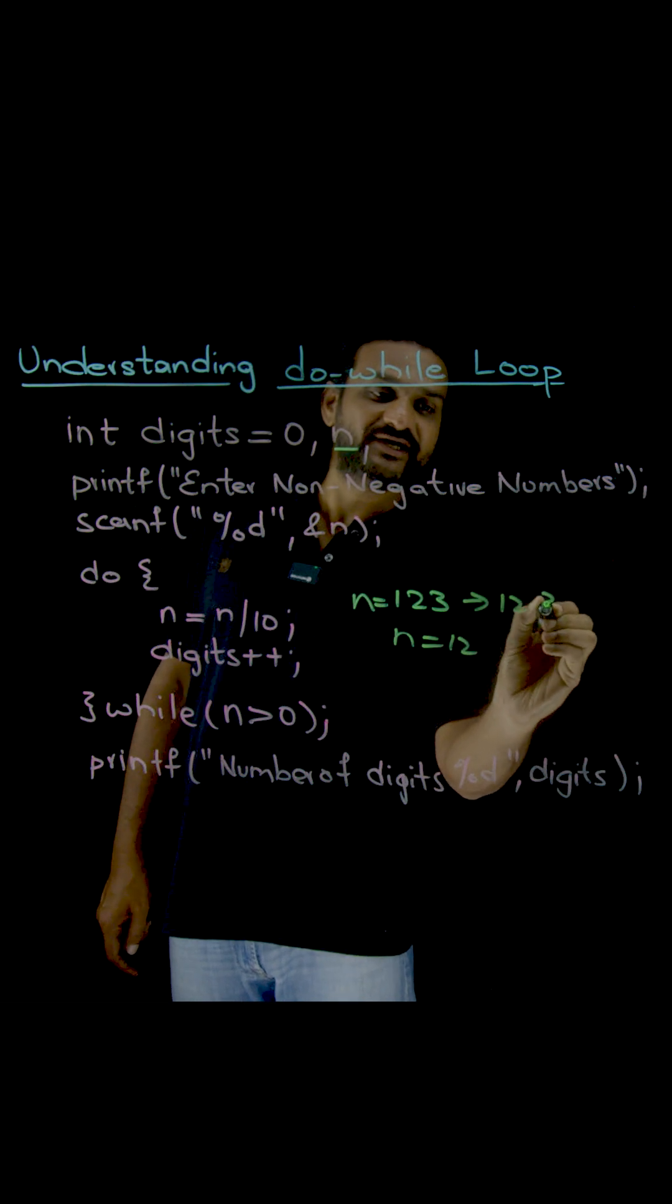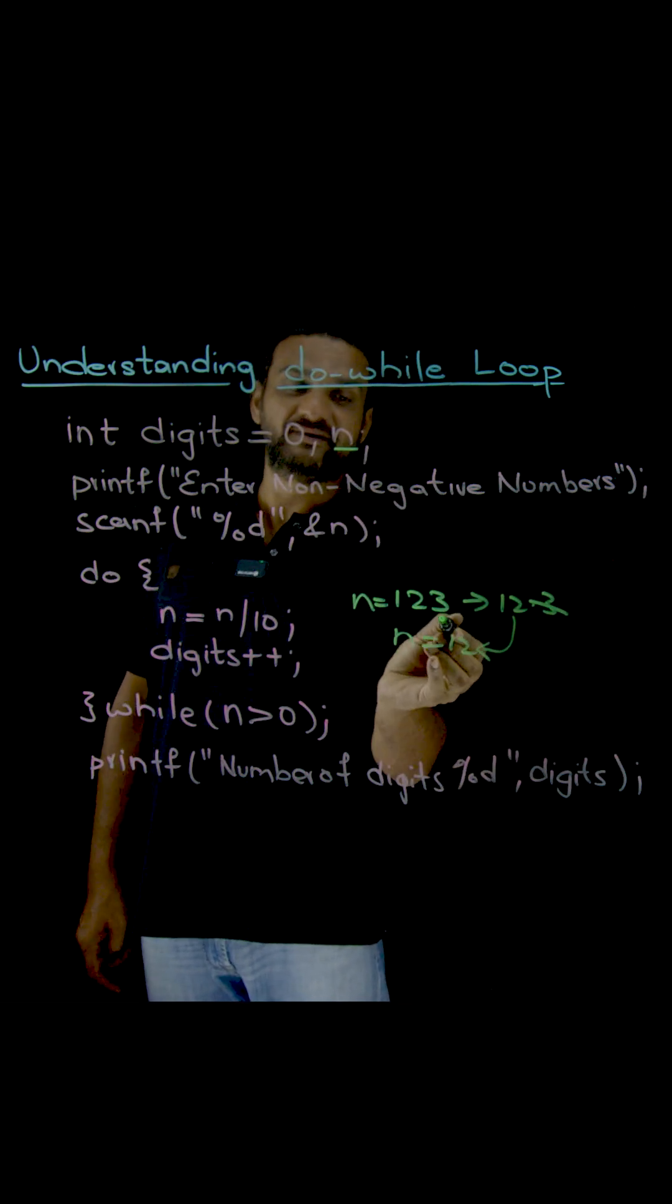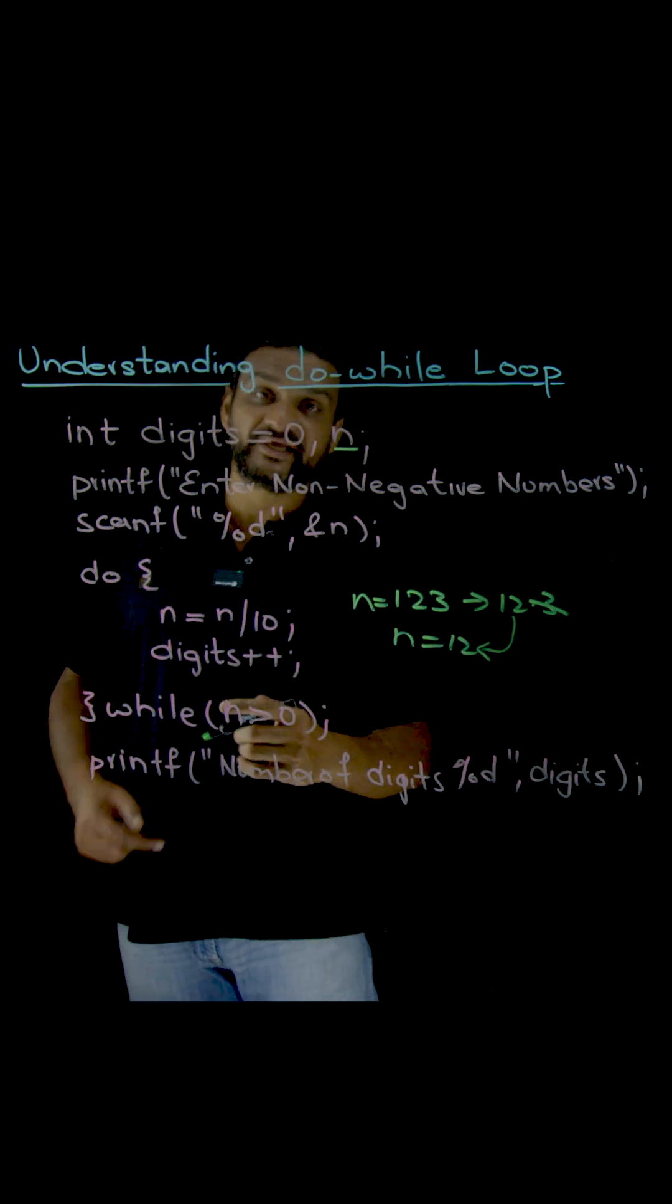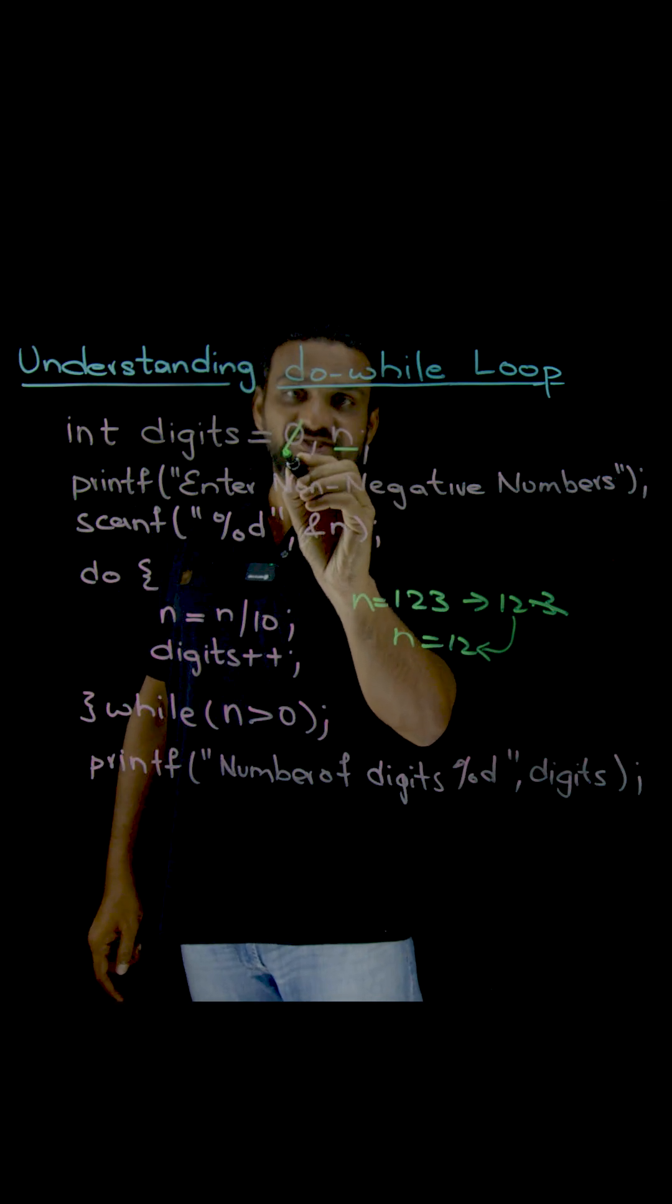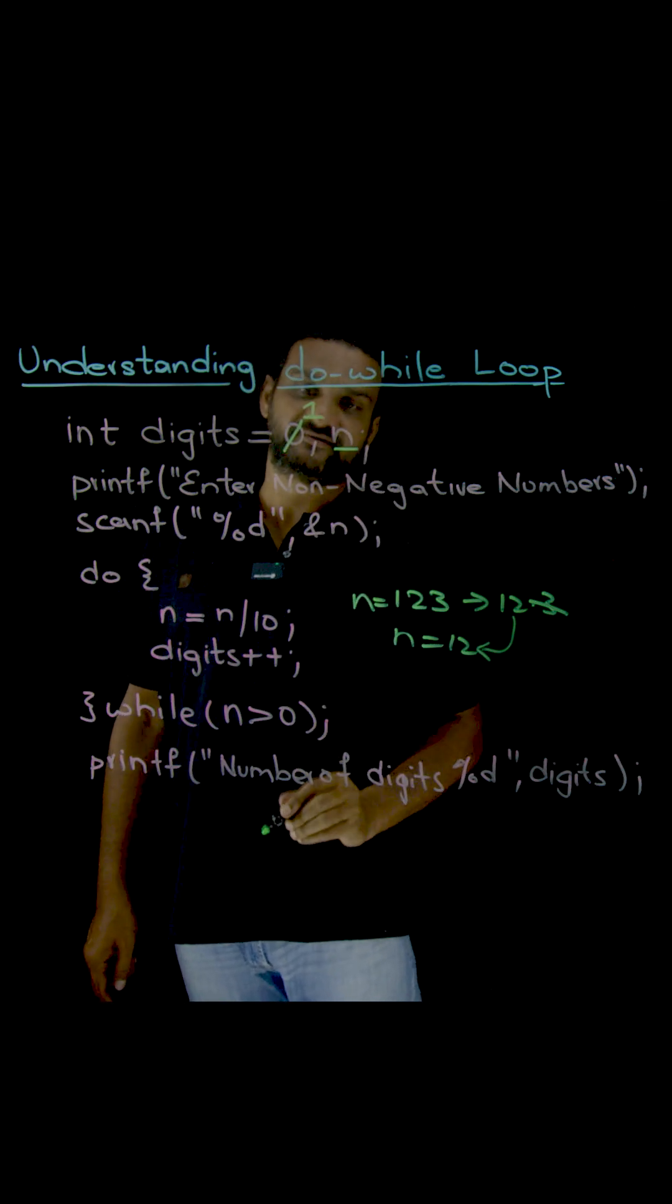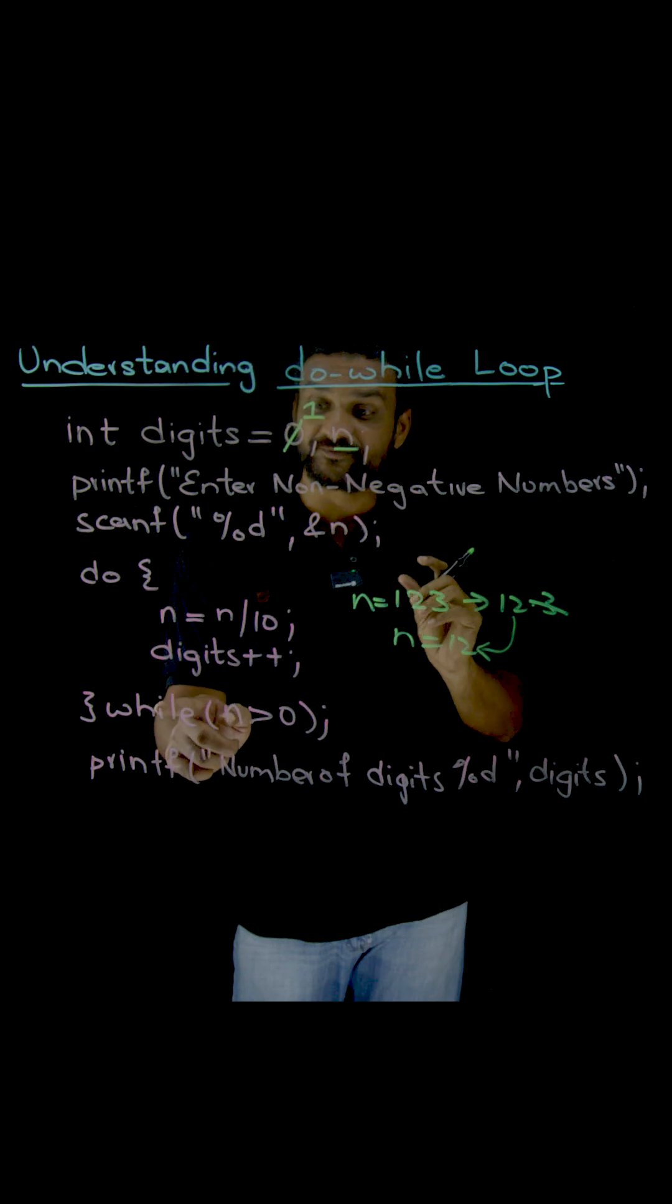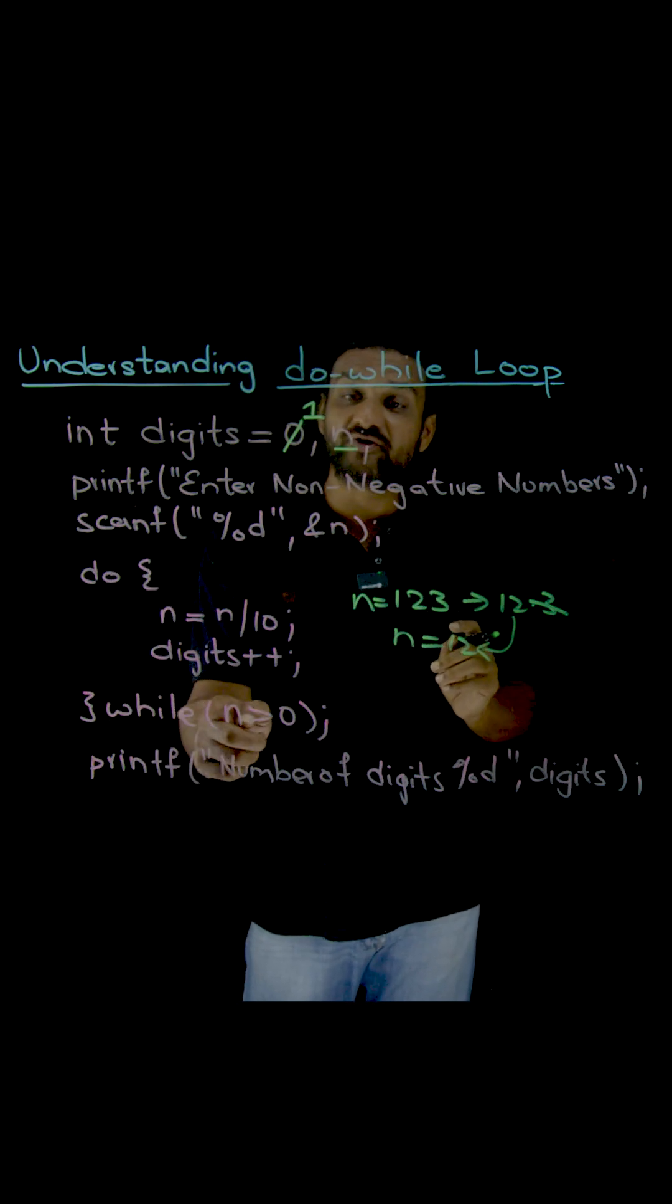So 123 by 10, this one is going to be 12.3. The .3 will get discarded and the new value of n will become 12, and digit will be incremented. Now what is the value of digit? Previously it is 0, now it has become 1. Now we are going to check. This is where the concept of do-while comes into action. First the body has been executed, now the comparison.